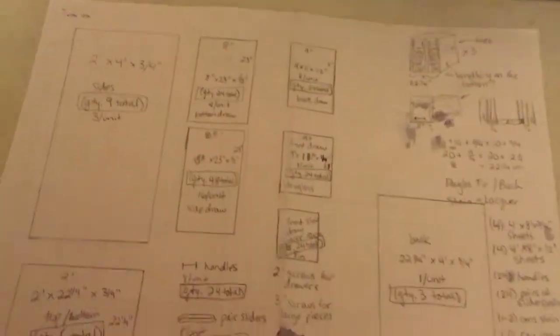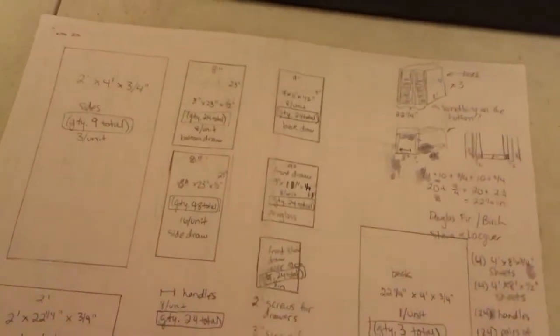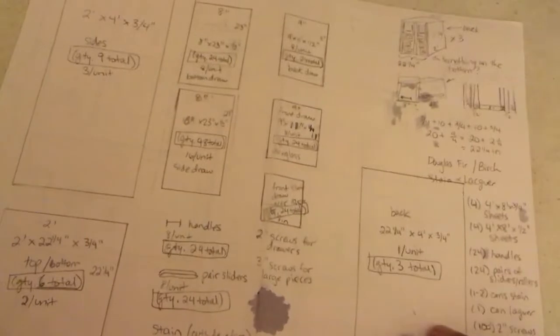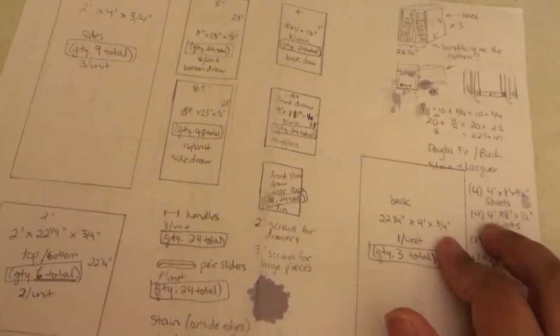Hi, sorry about that. So we got a little cut off. But anyway, continuing on. So I was talking about how I picked the side pieces, the top and bottoms and the back. These are all three quarter inch pieces.